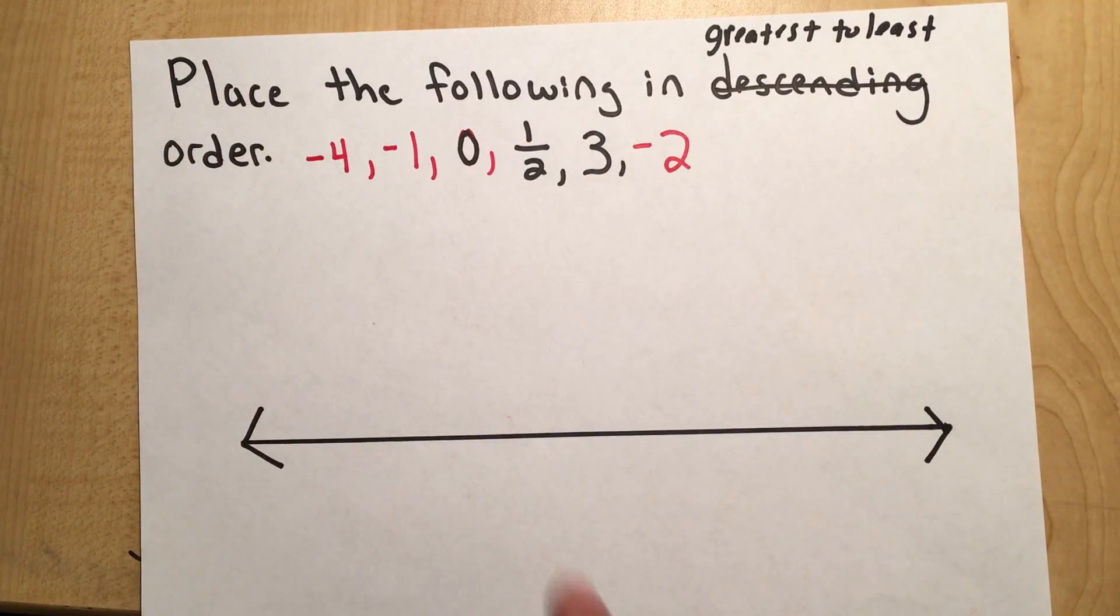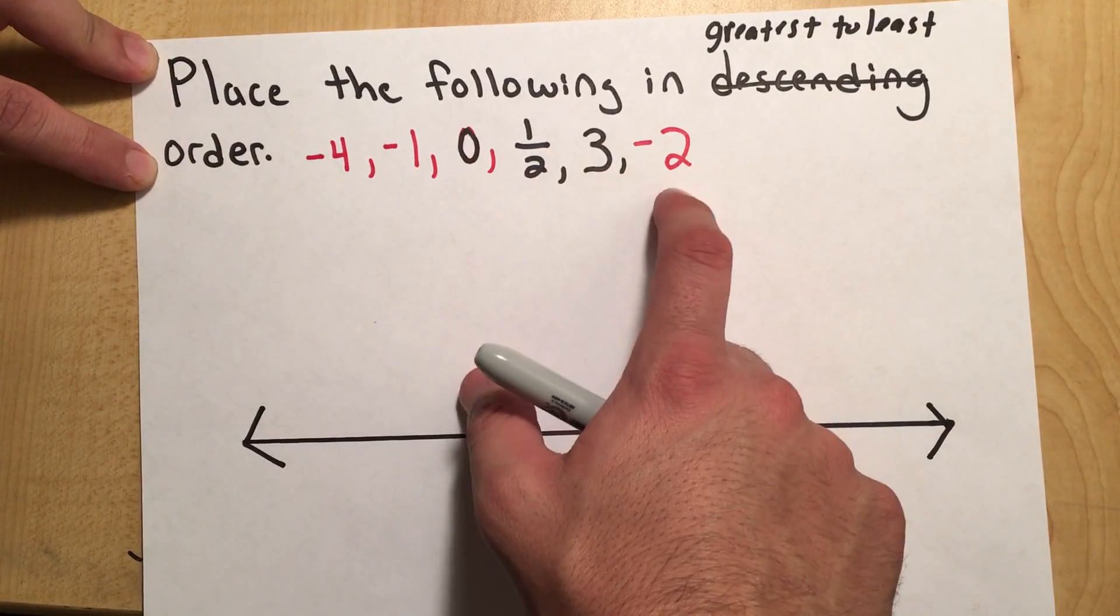And these are our numbers here: negative 4, negative 1, 0, 1 half, 3, negative 2.